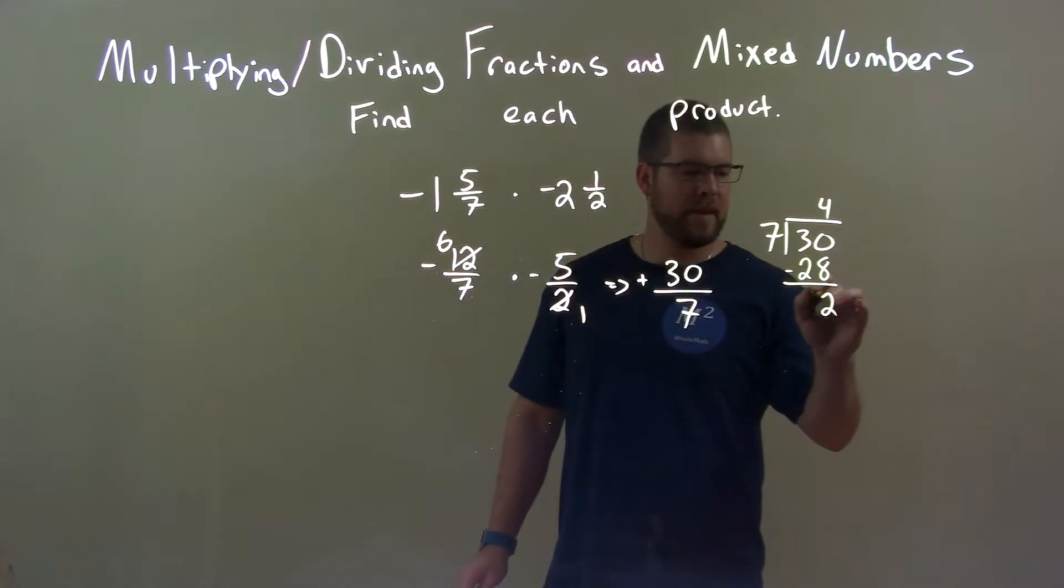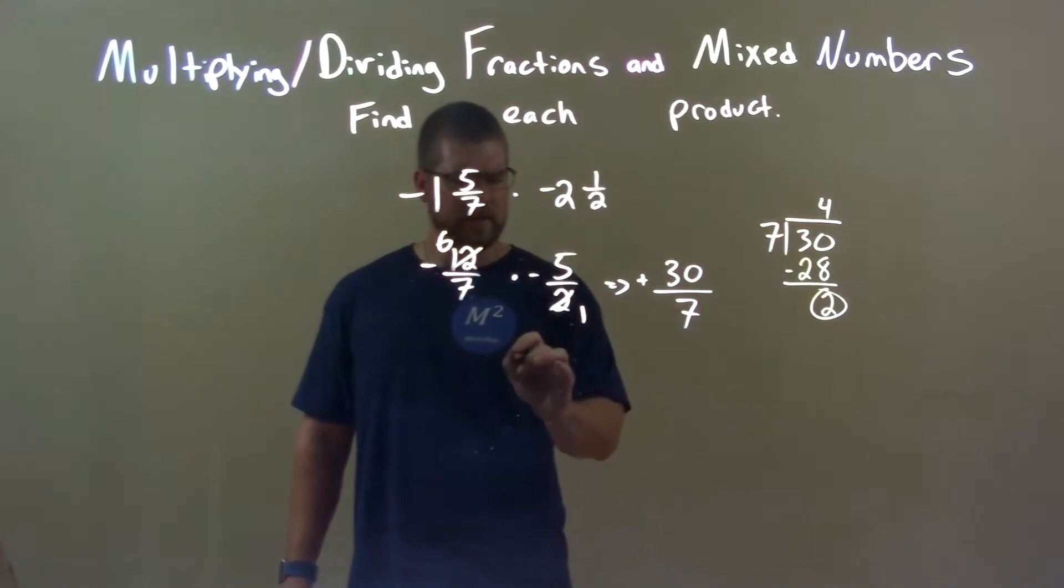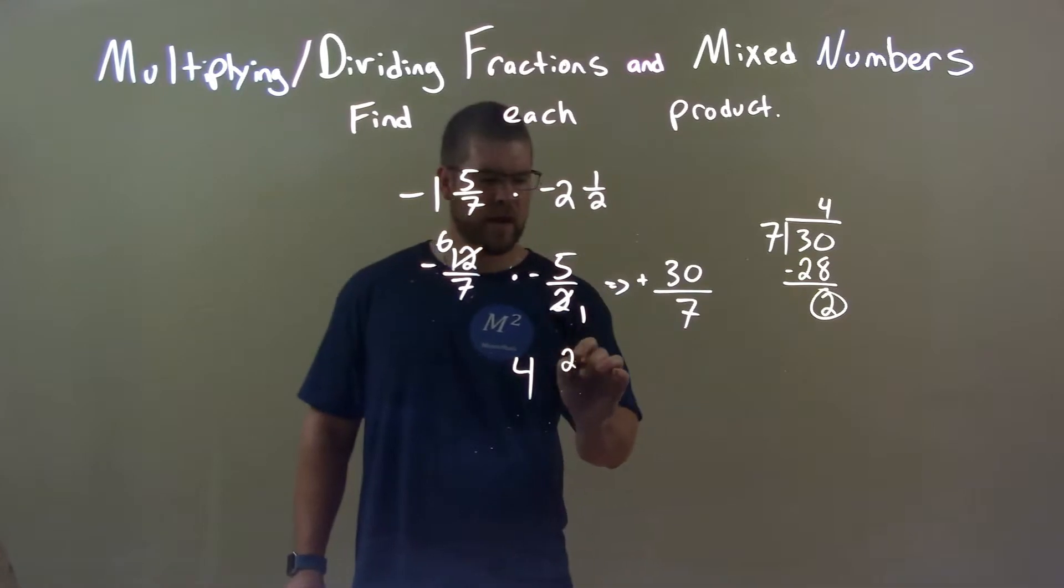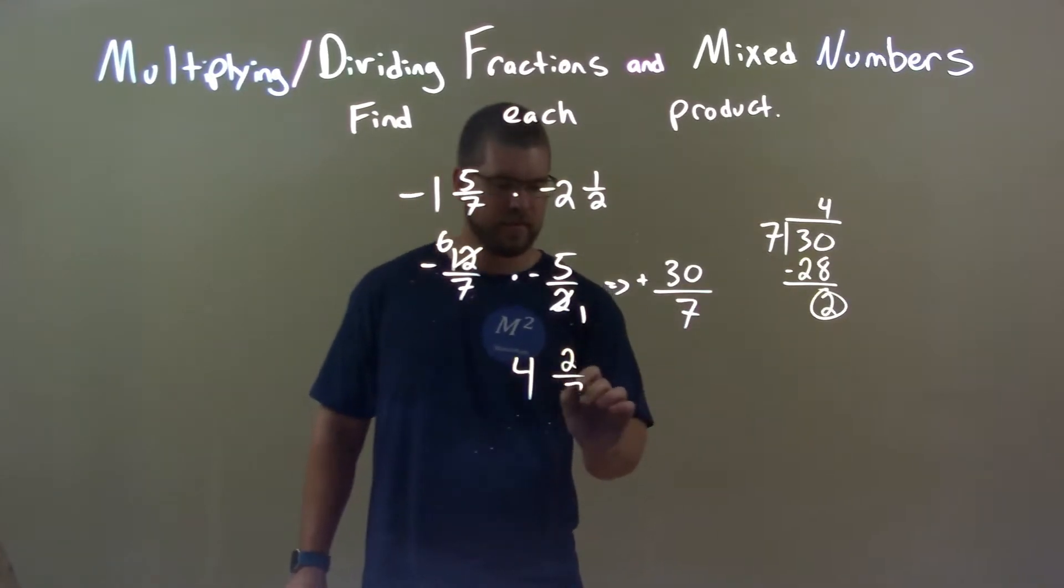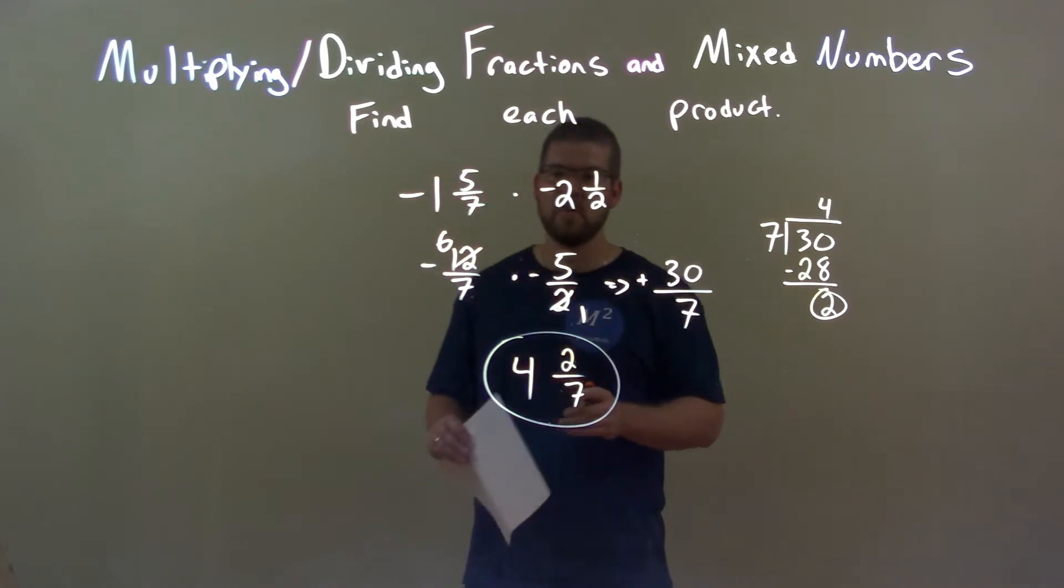So, what does that mean? What does that mean here? Well, 4 is a whole number out there, 2 being the remainder is the top of the fraction, and 7 is the divisor. So, our final answer here is just a positive 4 and 2 sevenths.